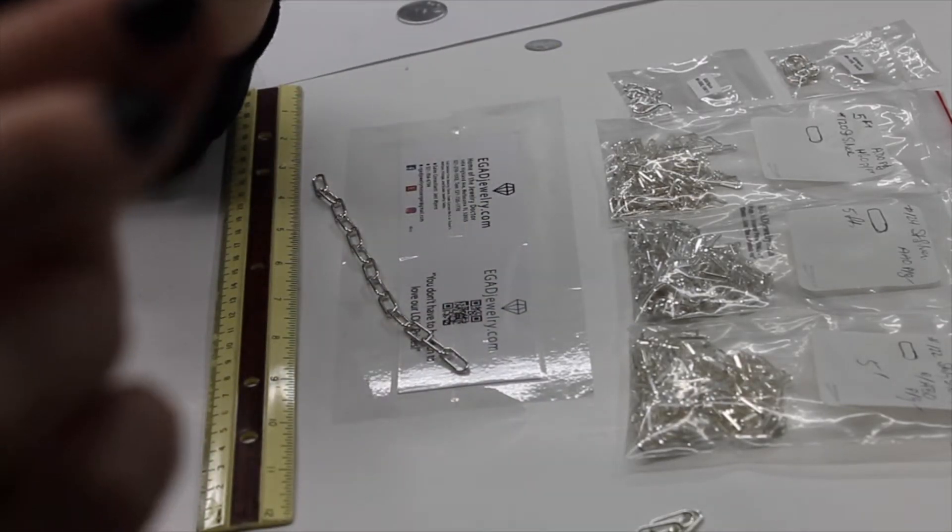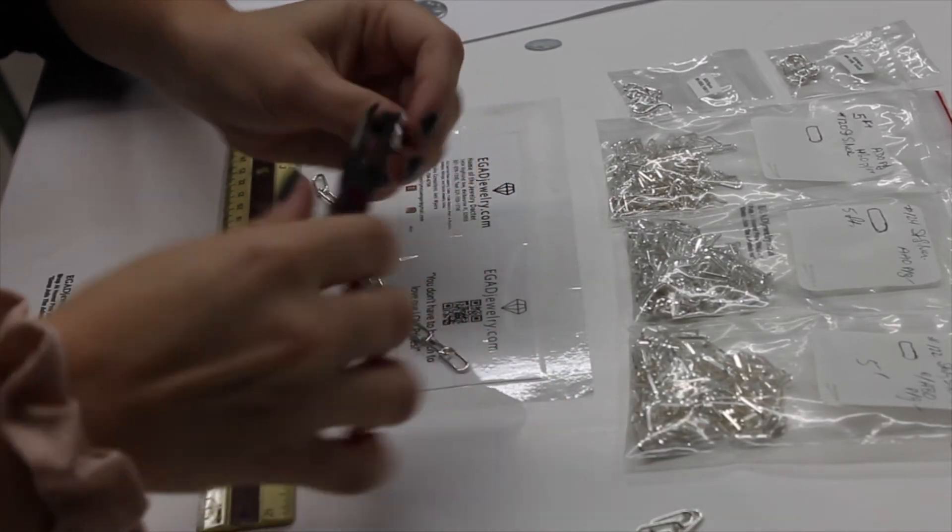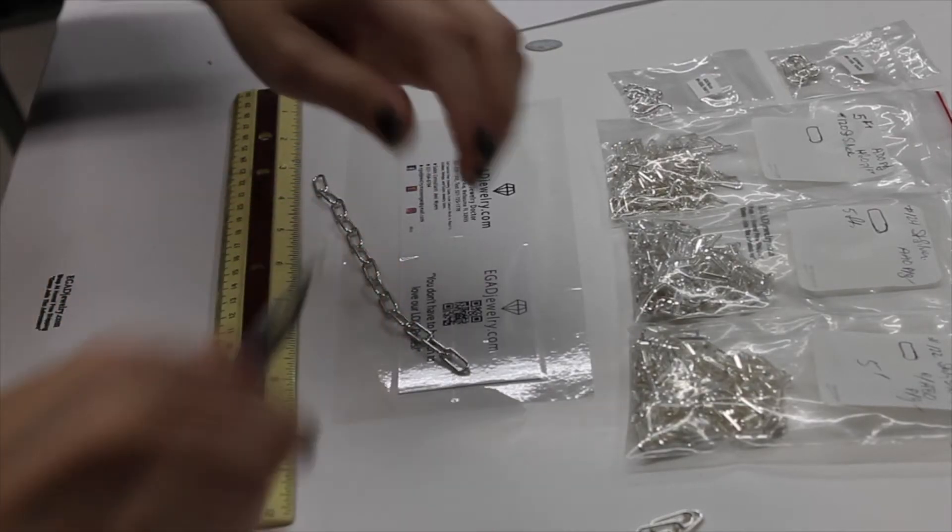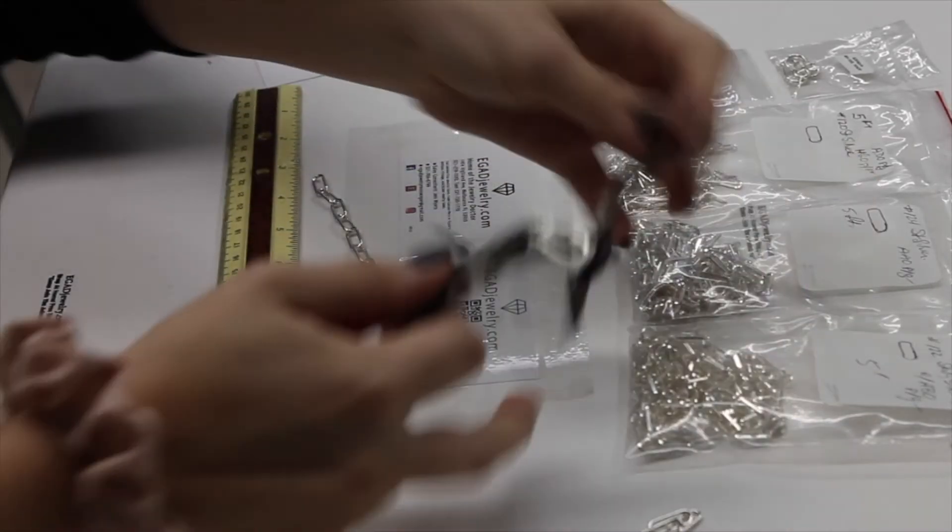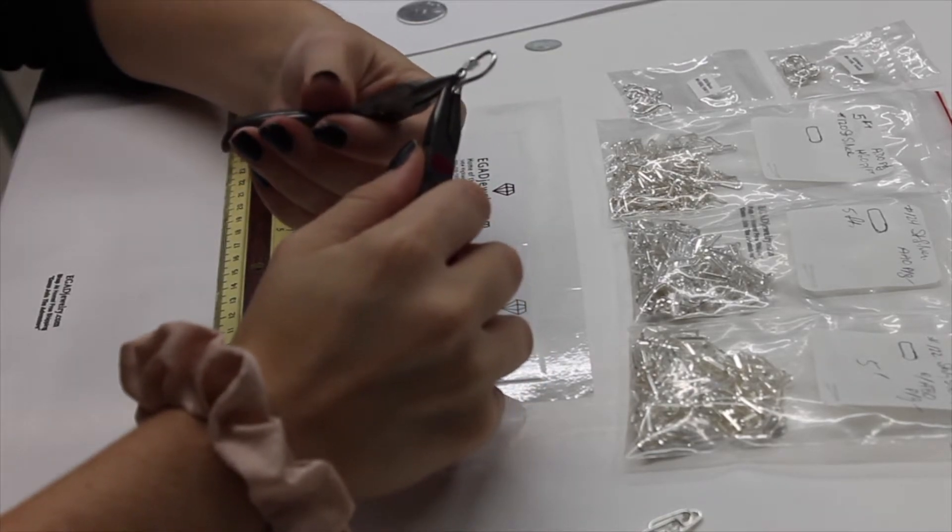So with this type of catch, we're going to move the jump ring, and you want to move it to the side so you don't mess it up. It's easy to put back.